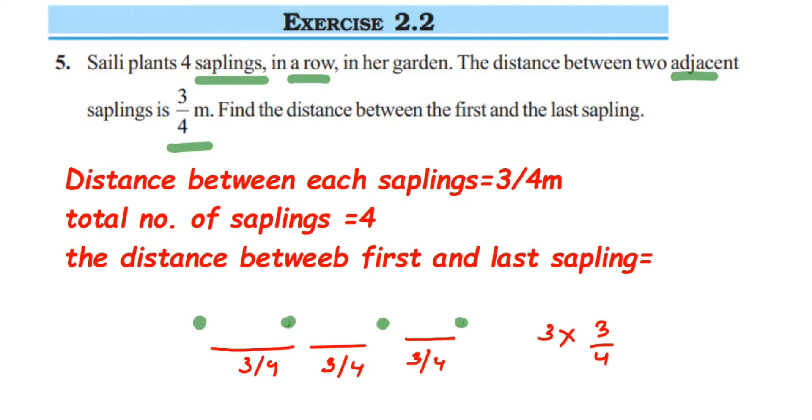Total distance will become 3 into 3 by 4. Instead of adding 3 by 4 three times, you can even do that. You will get the same answer. I just want to avoid the addition here because it is going to take longer time. So we are going to go for the multiplication because we are adding 3 by 4 here 3 times. 3 into 3 by 4 is an easy way of doing it.